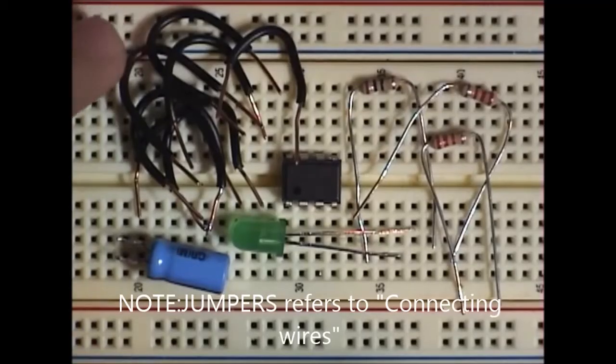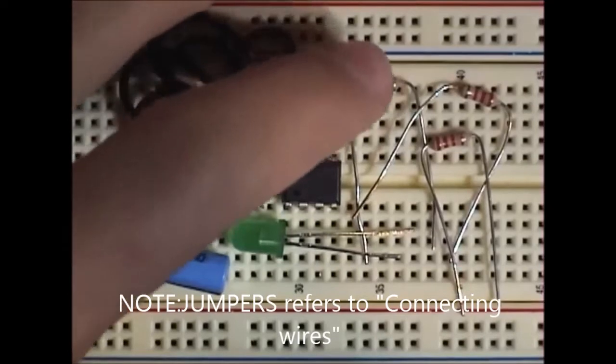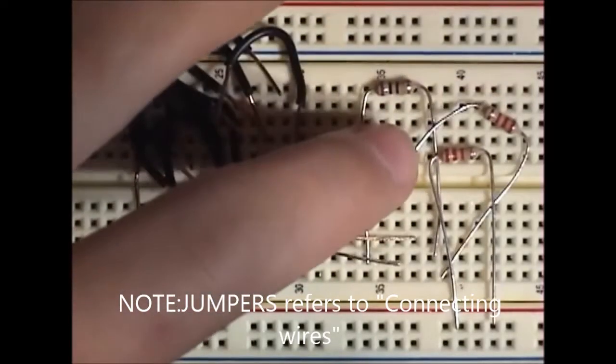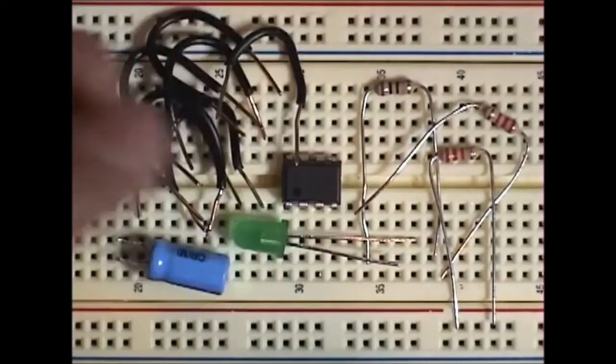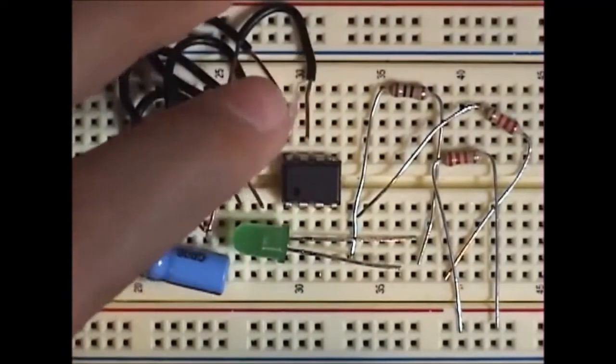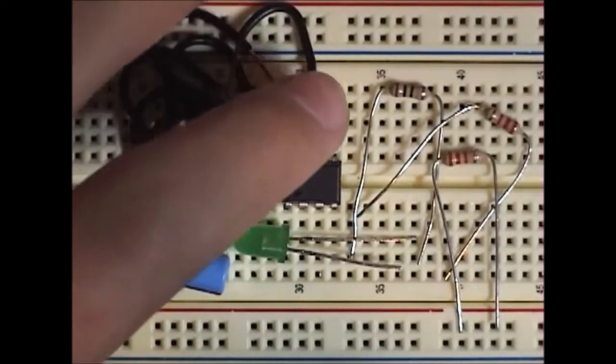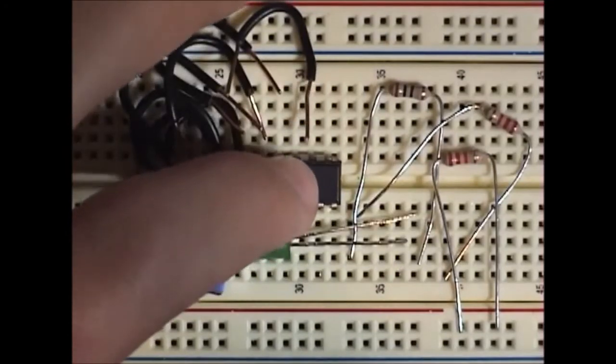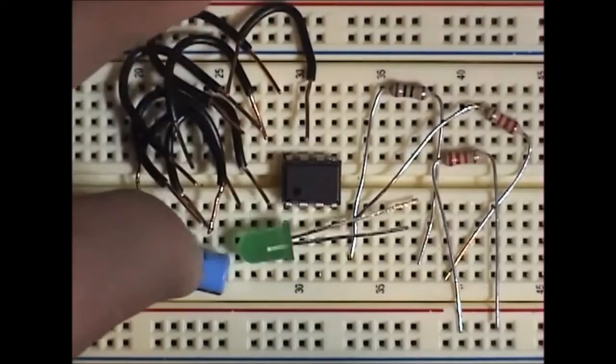All right, what you'll need is some jumpers, two resistors around 4K, and just one to limit the power to the LED, so say around 100 ohms, a 555 timer, an LED, and a capacitor.